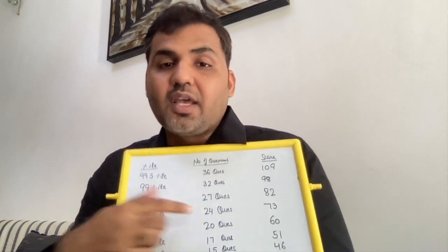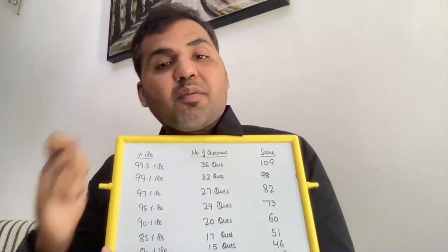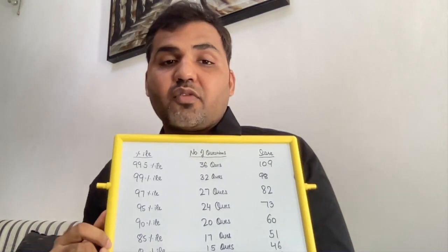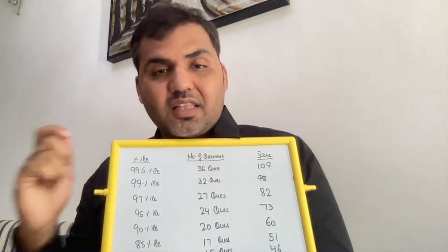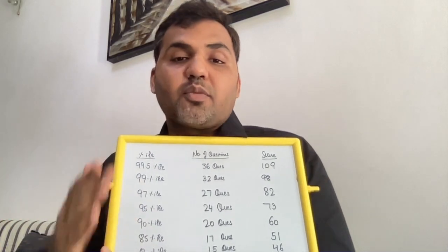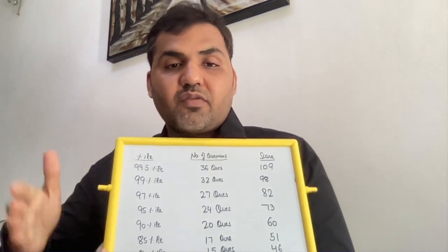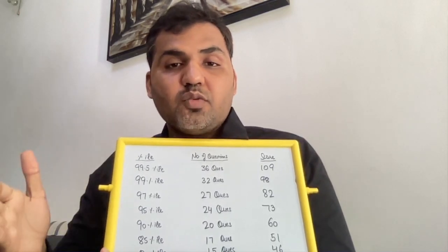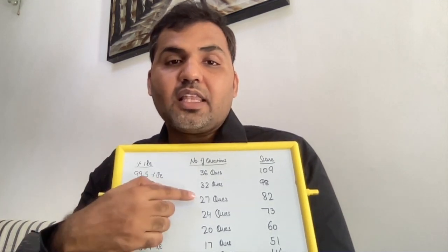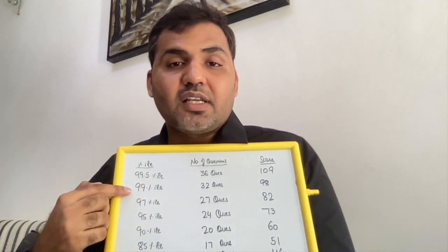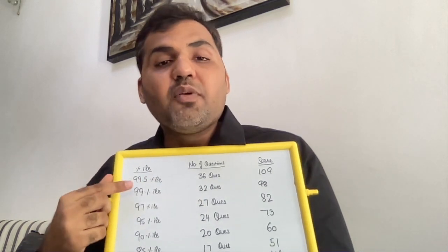Keep this data in mind and plan your strategy accordingly. Attempt the number of questions with these targets in mind and pick easy questions first, then moderate, then difficult. Divide your attempts in mock papers as well as the final paper into three phases: phase one easy, phase two moderate, phase three difficult. If you cover easy and moderate questions, nobody can stop you from getting 99 percentile — easy and moderate will definitely cover 32 questions.